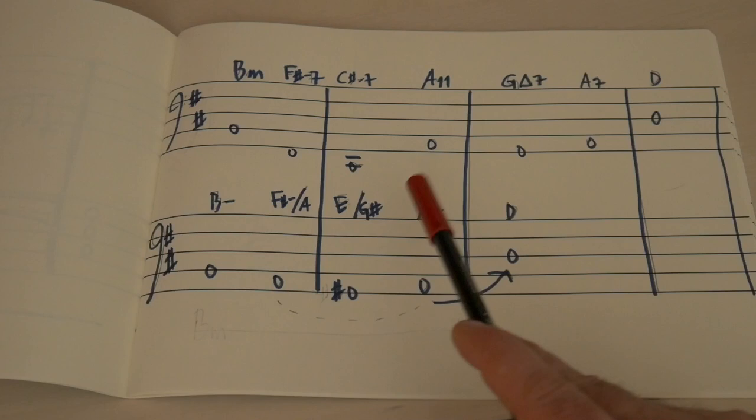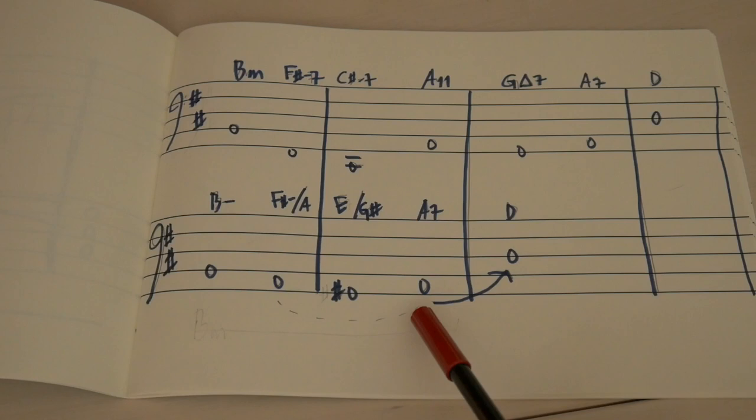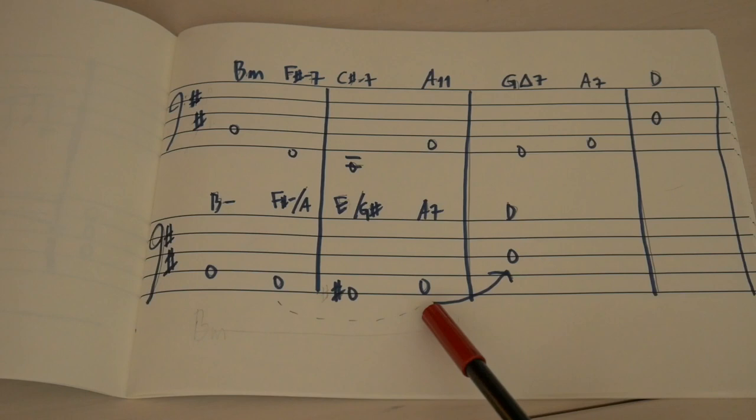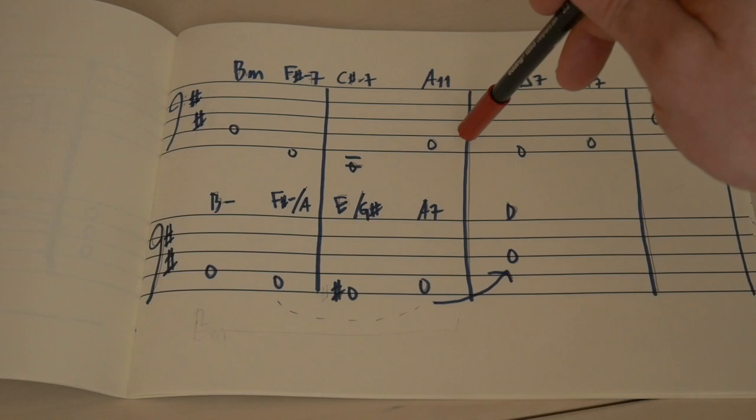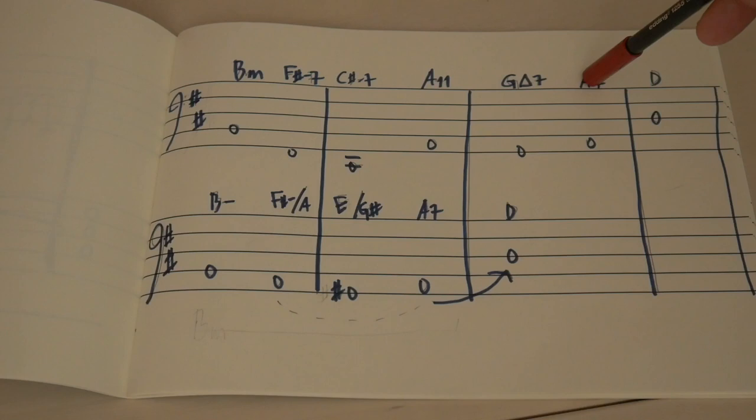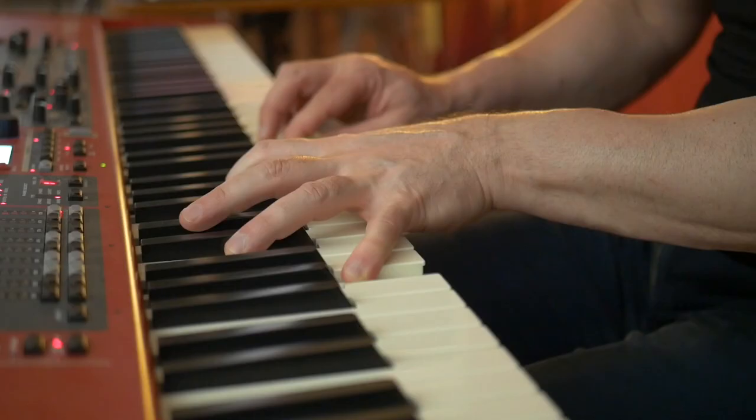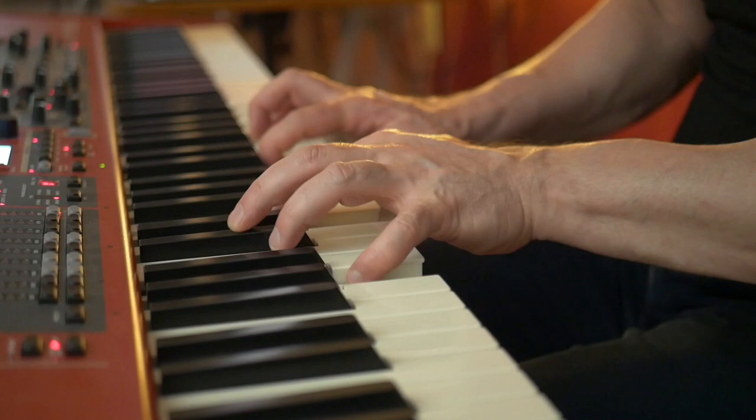One more thing we can see is the addition of this bar. Because right here, in both versions, we arrive at A, which is the dominant of the tonic D. Right here in the simplified version, I'm getting to D here. In the original, we have an extra bar going to the lower neighbor G, from A to G, then back to A, and then to D.